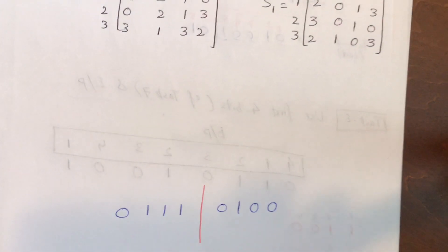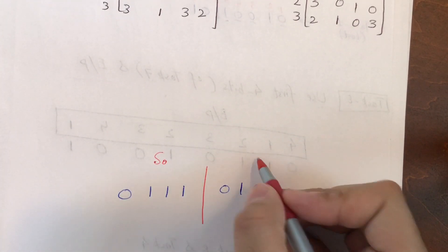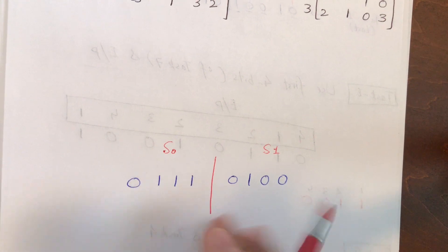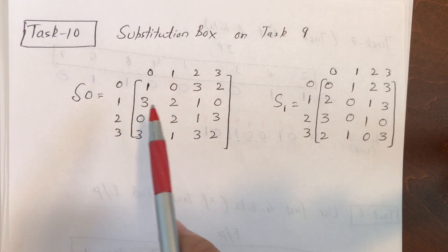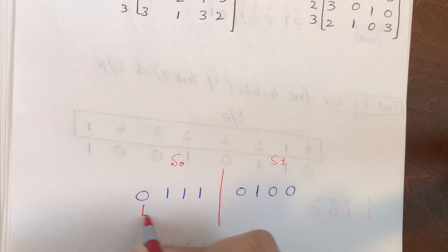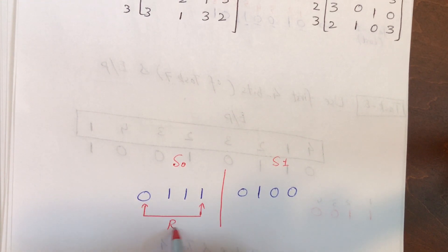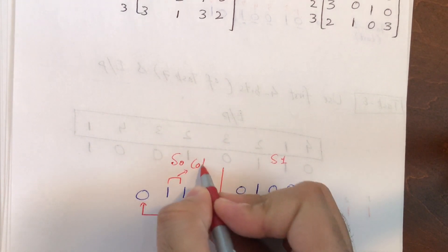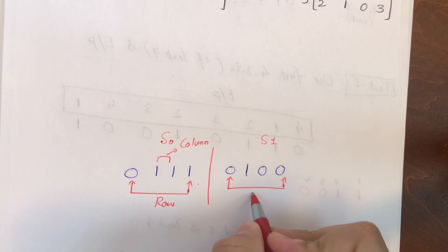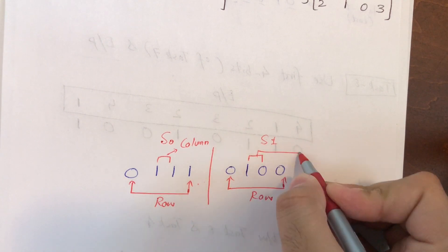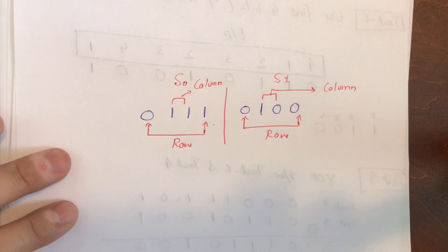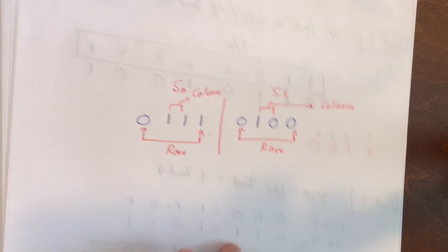The substitution boxes are written in decimal values, so we need to convert binary to decimal. The outer two bits select the row, and the inner two bits select the column — the same applies to S1. For S0, outer two bits give the row; inner two bits give the column.